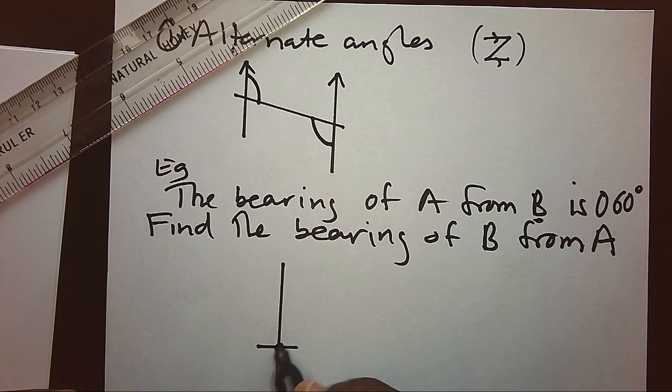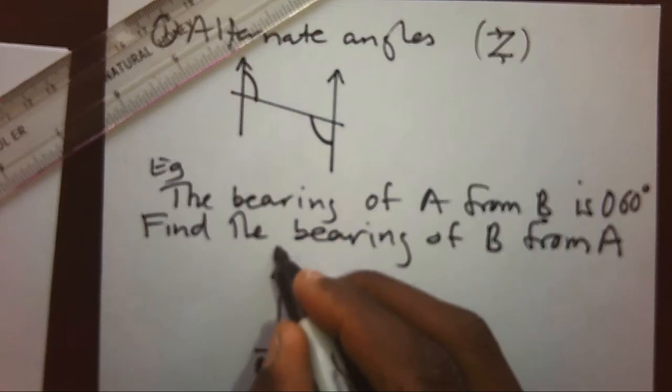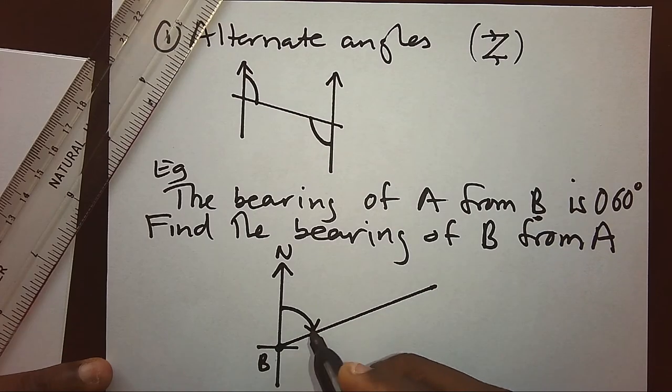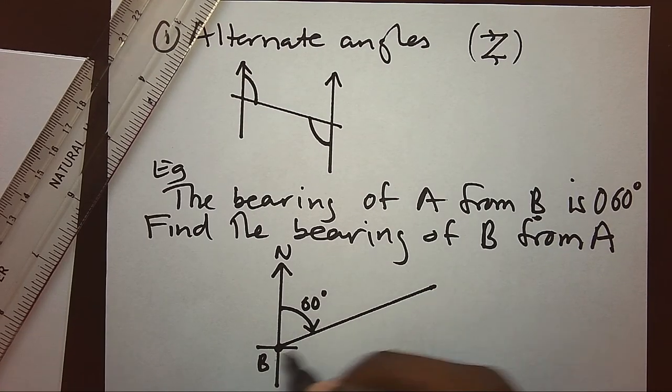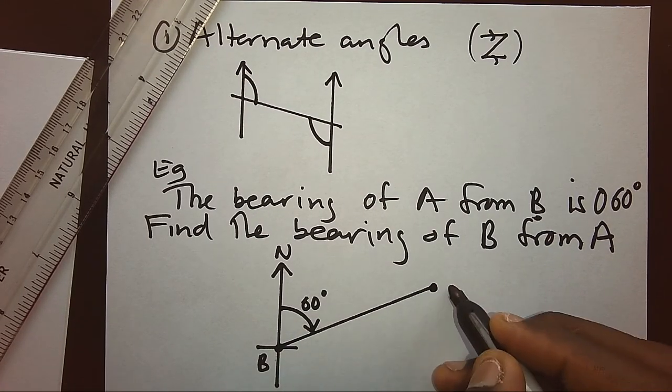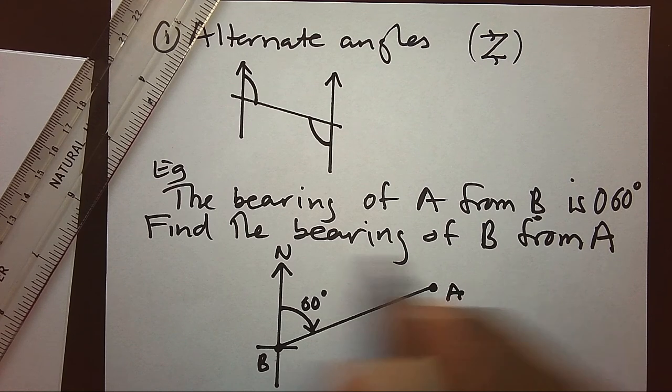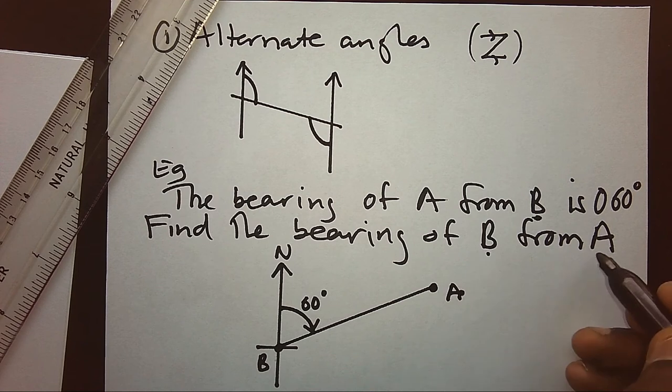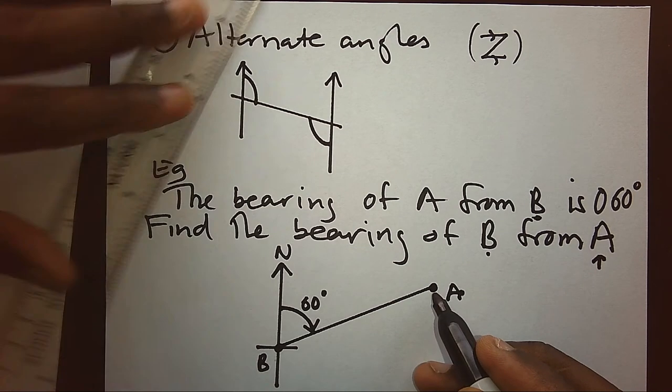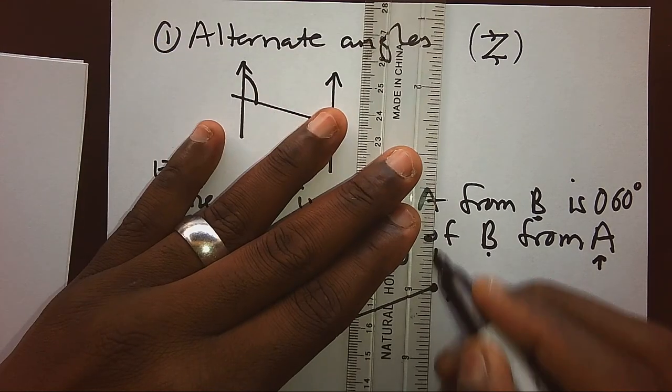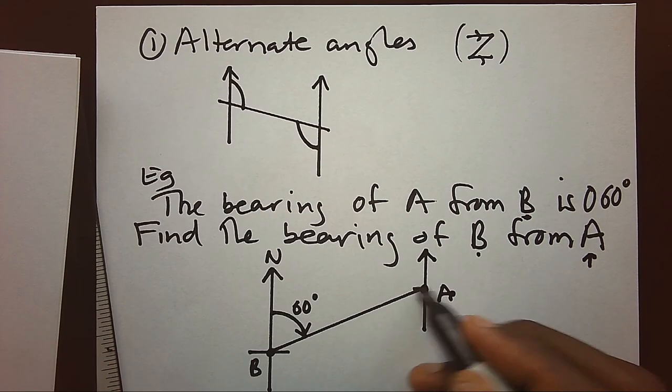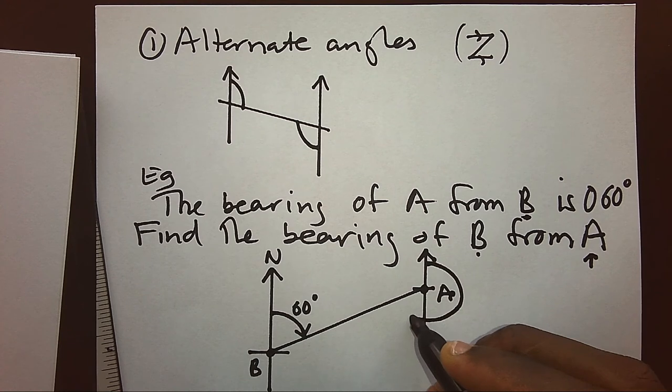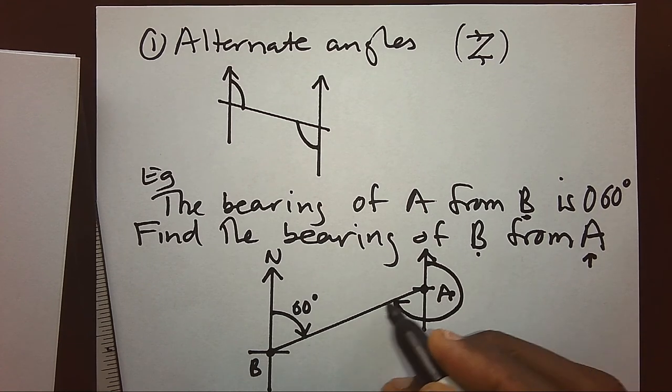This position is B. This is our north. 60 degrees could be somewhere here by virtue of estimate, and somewhere where we are not given the distance could be the position of A. So this is our first one. But when we are told to find the bearing of B here starting from A, that means now I have to stand at A with one north at A, then move clockwise until you meet the line of sight where you can view B.